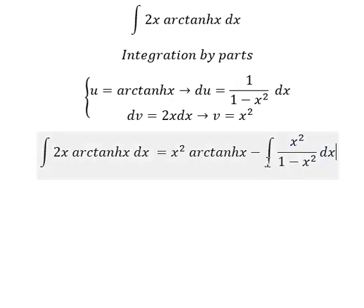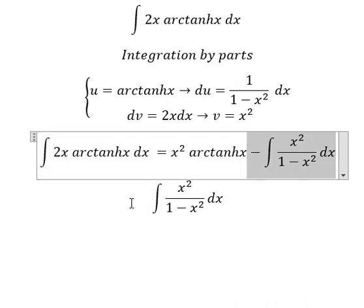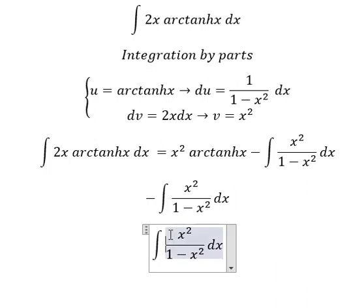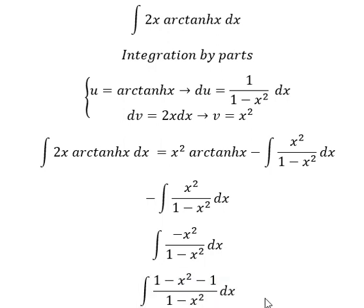Now we need to focus on this integral. We need to put a negative in here. Next we need to add and subtract 1, so 1 minus x squared divided by 1 minus x squared gives us 1.